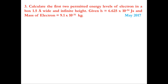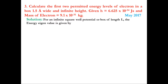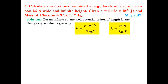This question was asked in May 2017. For an infinite square well potential of length L, the energy eigenvalue is En = n²π²ħ²/(2mL²), where n is the order of the energy level, ħ is Planck's constant divided by 2π, m is the mass of the particle, and L is the width. Substituting ħ = h/(2π), this becomes En = n²h²/(8mL²).